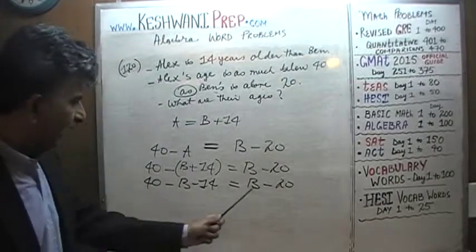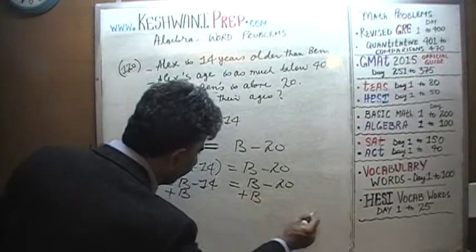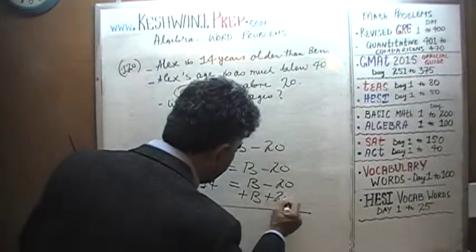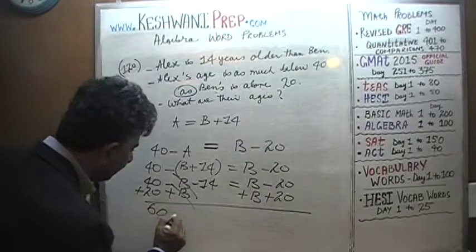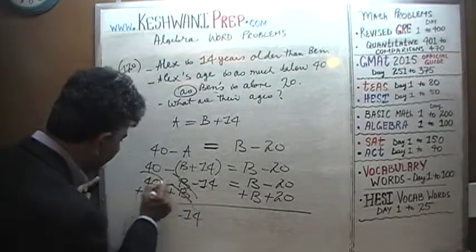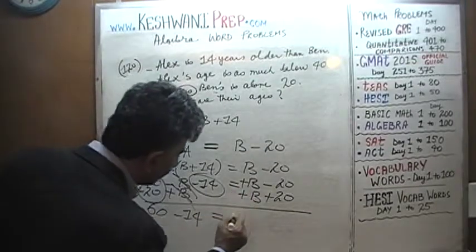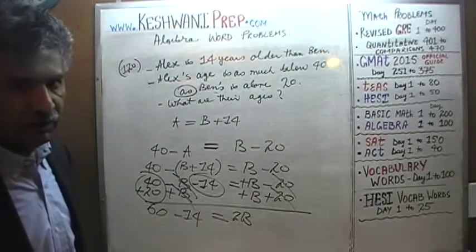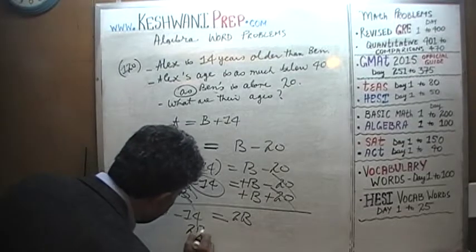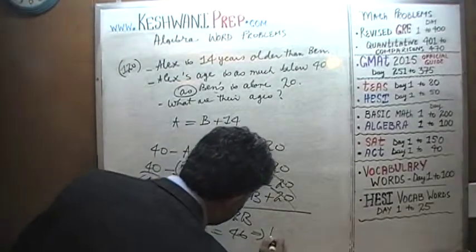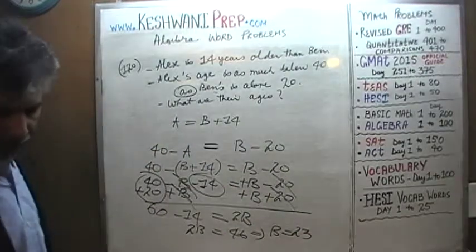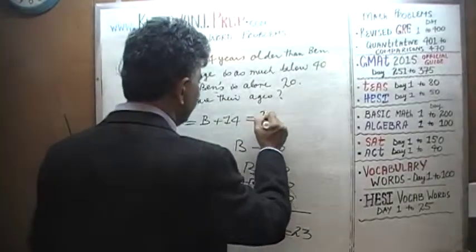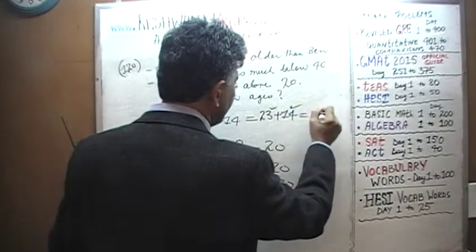The rest is very straightforward. Add B to both sides — the B terms on the left drop out. Then add 20 to both sides. We get 60 minus 14 equals 2B. 60 minus 14 is 46, so 2B equals 46, which means B equals 23. If B is 23, then A equals 23 plus 14, which is 37.